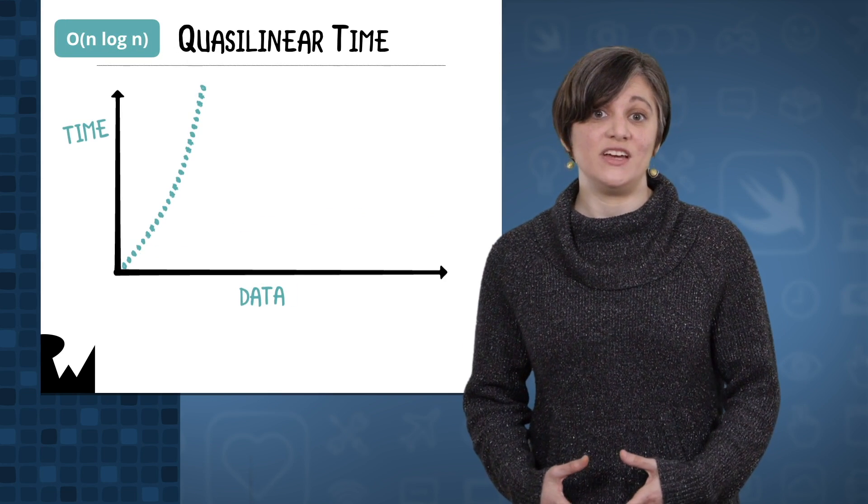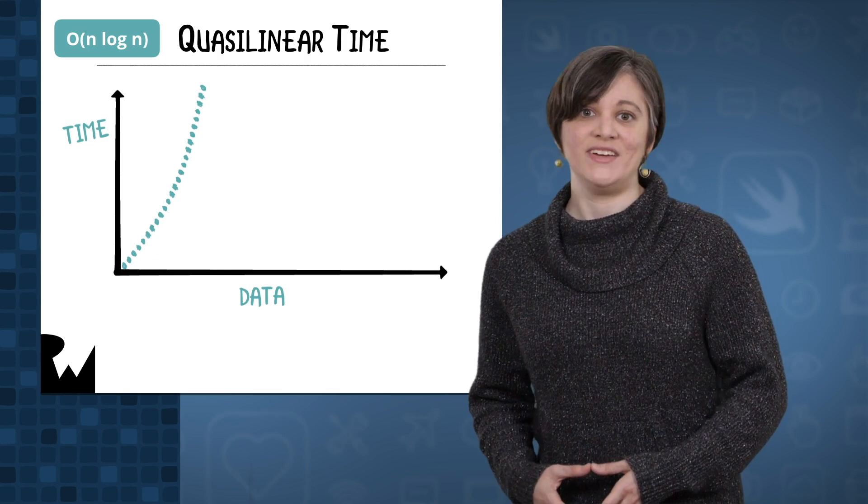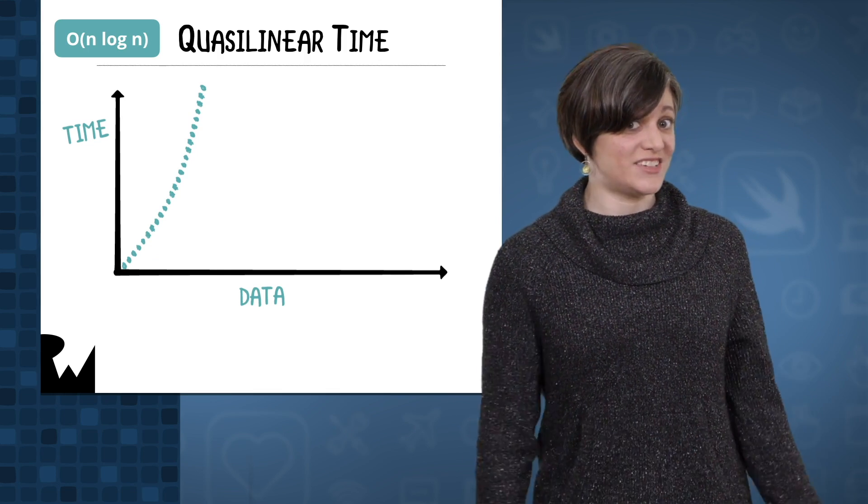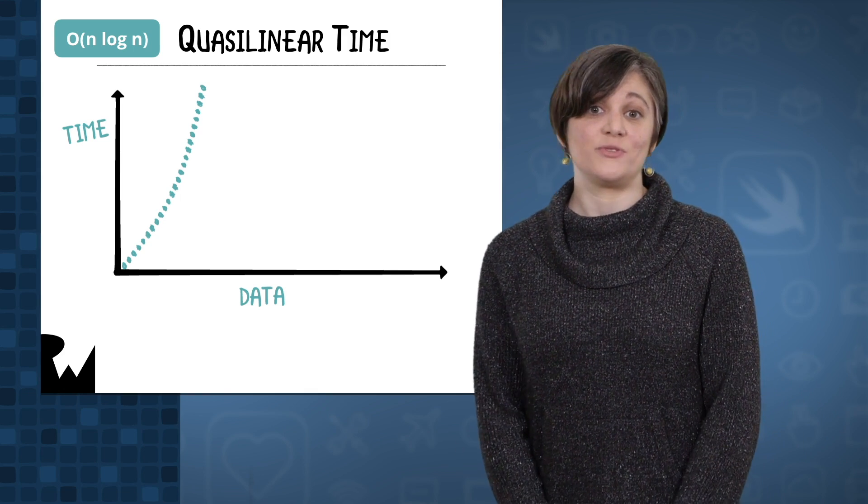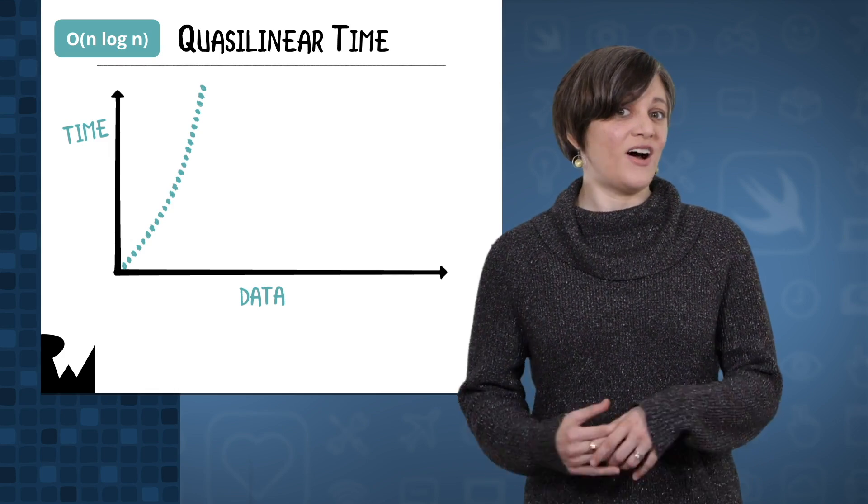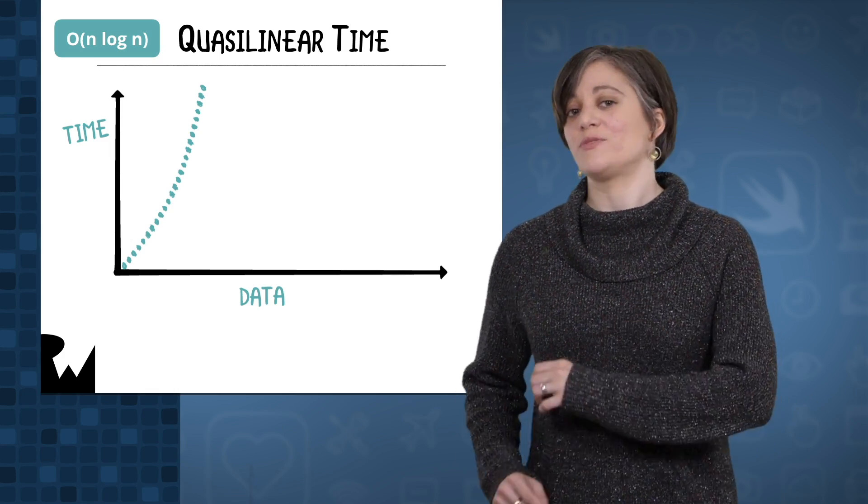The final type of time complexity you'll see in this course is quasi-linear time. This one performs worse than linear time, but significantly better than quadratic time. The Big O notation for this one is big O of n log n. There are many other time complexities, but these are the most common.